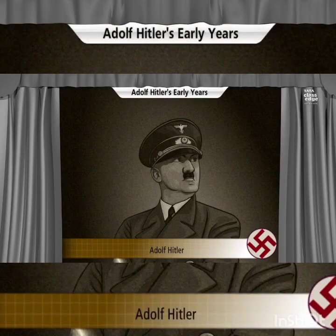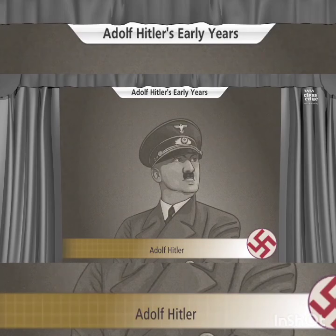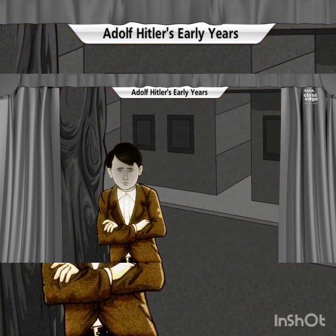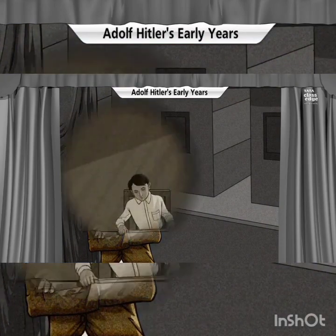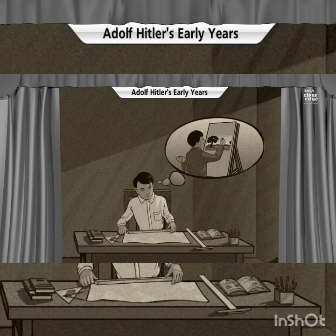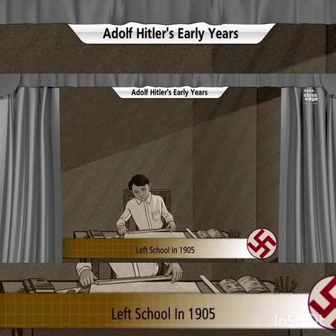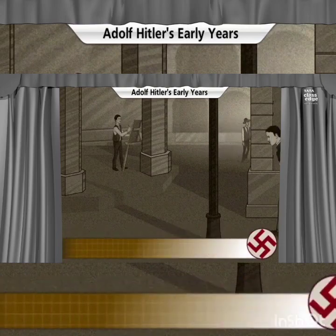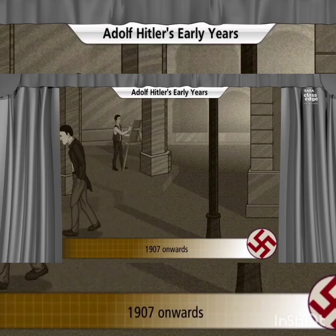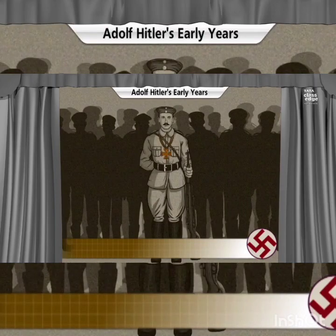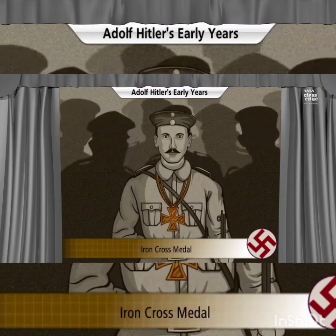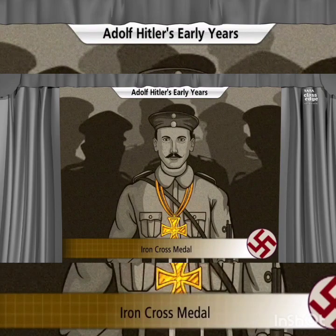Adolf Hitler — a name synonymous with power — had his destiny shaped by early experiences. Born in 1889 in a small village in Austria, his early days were marked by poverty and struggle. Hitler wanted to be an artist, but on his father's insistence took up technical education, making him rebellious. His next few years were spent penniless in the streets of Vienna pursuing his dream of being a painter. Enrolling in the German army during World War One ignited a spirit of patriotism, and he was twice recognized with the Iron Cross medal for bravery.